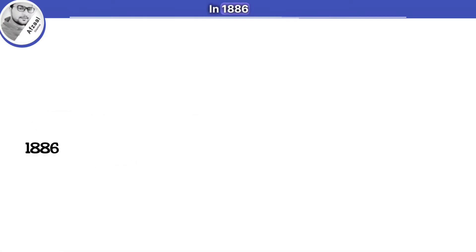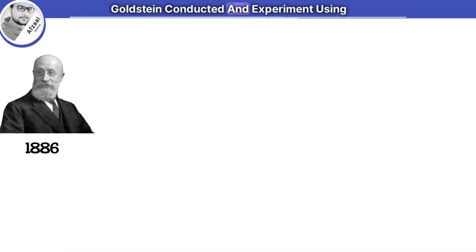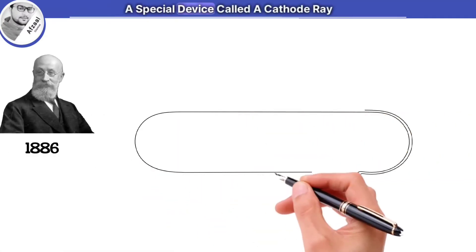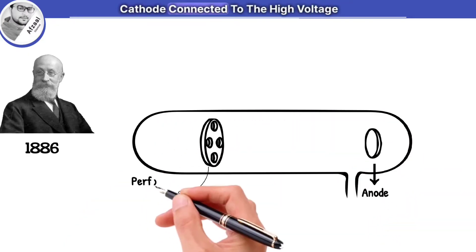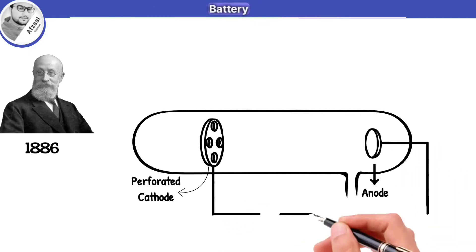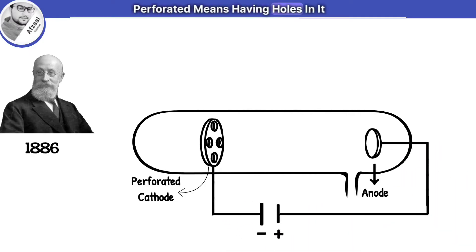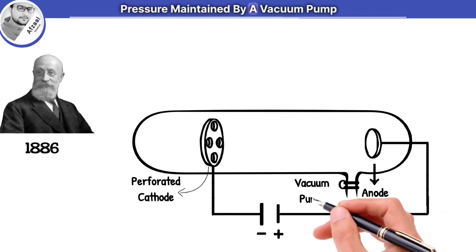In 1886, Goldstein conducted an experiment using a special device called a cathode ray tube, which has an anode and perforated cathode connected to a high-voltage battery. Perforated means having holes in it. This tube was filled with gas at low pressure, maintained by a vacuum pump.